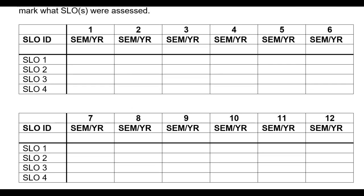The next section is this big chart. You're going to put in the semester and year that you're doing the assessment — for example, Fall 21 — and you can type that where it says 'Semester Year.' Maybe I want to assess SLO 1, and then the next semester, Spring 22, maybe I'm teaching the same class again and I want to assess SLO 1 and SLO 2. You just put an X for which SLOs are getting assessed that semester.